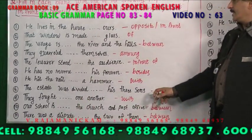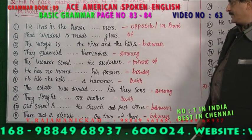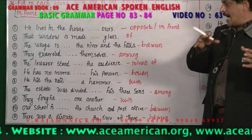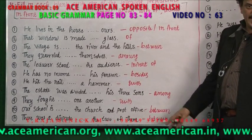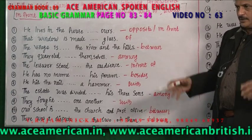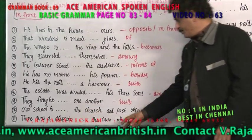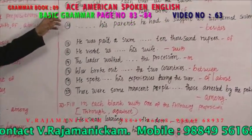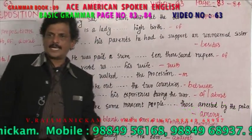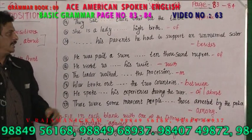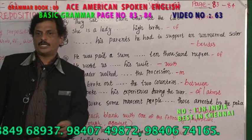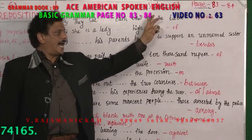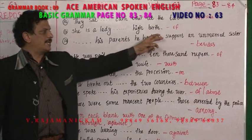'The estate was divided dash his three sons.' If it were two sons you would use 'between,' but for three sons you use 'among.' 'They fought dash one another' — they fought with one another. 'Our school is dash the church and post office' — church on one side, post office on the other side — our school is between the church and the post office. 'There was a dispute dash the two of them' — between the two of them. 'They sat dash each other at the table' — they sat opposite each other. 'She is a lady dash high birth' — she is a lady of high birth.